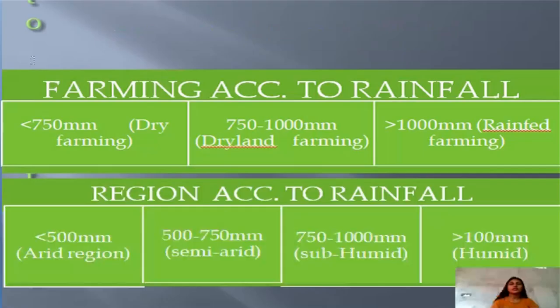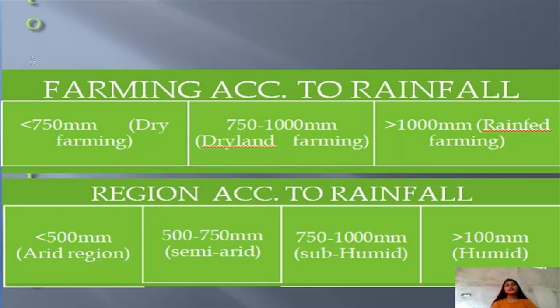Collective farming, also called communal farming, involves various types of agricultural production in which multiple farmers run their holdings as a joint enterprise. According to rainfall, if rainfall is less than 750 mm, then dry farming is practiced.